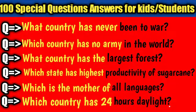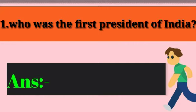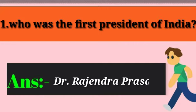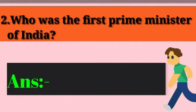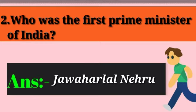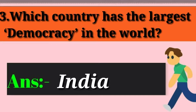Hi, welcome back to ZK Top Quiz YouTube channel. See our video and subscribe to the channel. Question 1: Who was the first president of India? Answer: Dr. Rajendra Prasad. Question 2: Who was the first prime minister of India? Answer: Jawaharlal Nehru. Question 3: Which country has the largest democracy in the world? Answer: India.